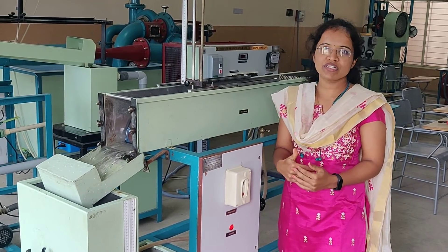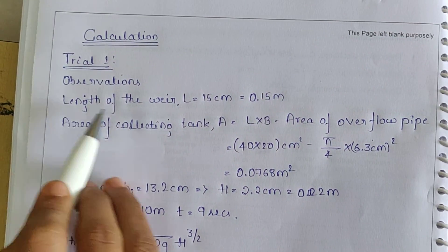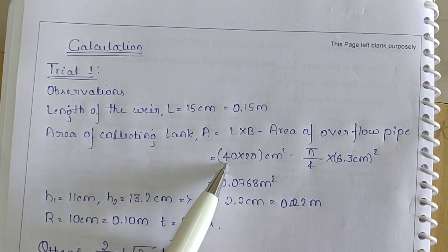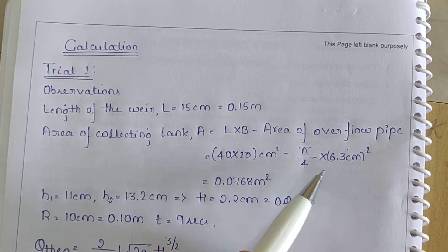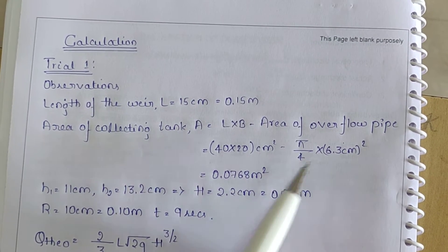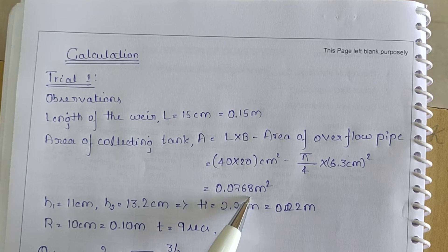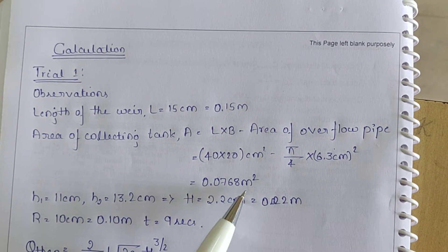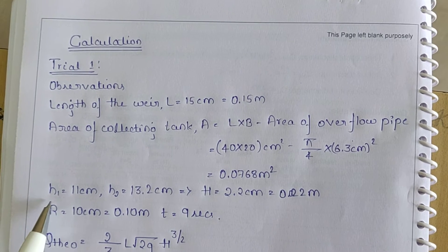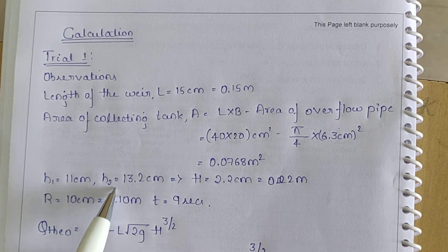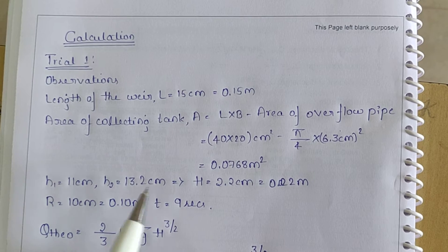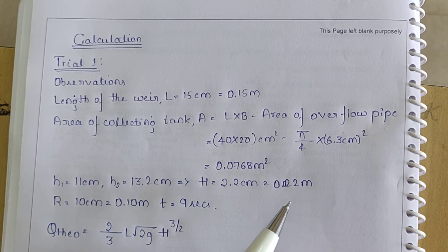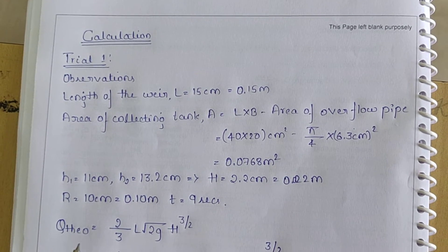We will see the calculations now. The length of the weir is observed as 15 cm. The area of the collecting tank is 40 cm by 20 cm with an overflow pipe of 6.3 cm diameter. Therefore, the area of the collecting tank is 0.0768 m². H1 was observed as 11 cm and H2 was 13.2 cm. Therefore, the depth of flow over the weir is 2.2 cm, or 0.022 m.